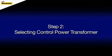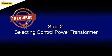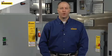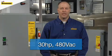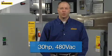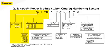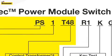The second step in the process is the selection of the proper control power transformer. Continuing with our 30 horsepower rated 480 volts AC example, the correct choice would be a T48, which stands for a 480 volt AC incoming service.